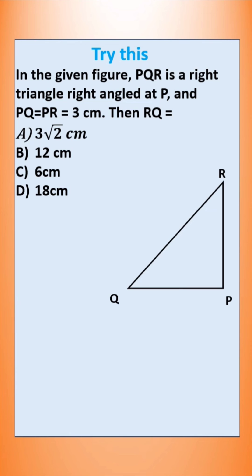Try this: In the given figure, PQR is a right triangle right angled at P, and PQ = PR = 3 cm. Then RQ equals—four options are given. Click the correct one and write it in the comment box.